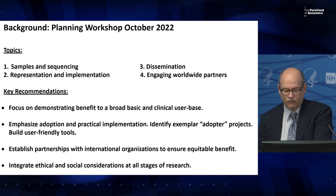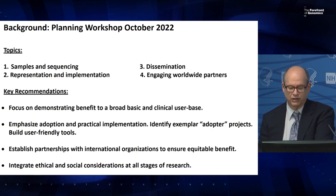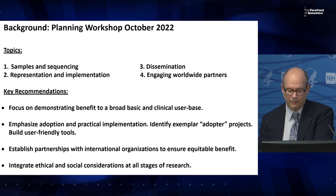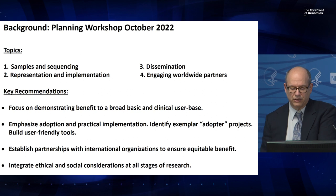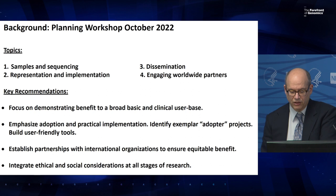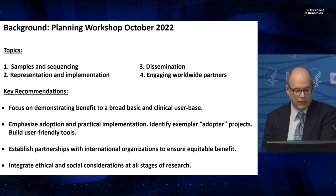Following that reasoning, they advised emphasizing adoption and implementation by identifying key adopter projects to demonstrate benefit for particular use cases — for example, intensive short-term collaborations with other genomics consortia motivated to adopt the pan-genome reference. They also recommended an increased emphasis on developing informatics tools for use of the pan-genome by the community, continuing to establish partnerships with international organizations to maximize the chances to achieve equitable benefit, and considering ELSI considerations at all stages, including project design, recruitment, adoption, outreach, and access.